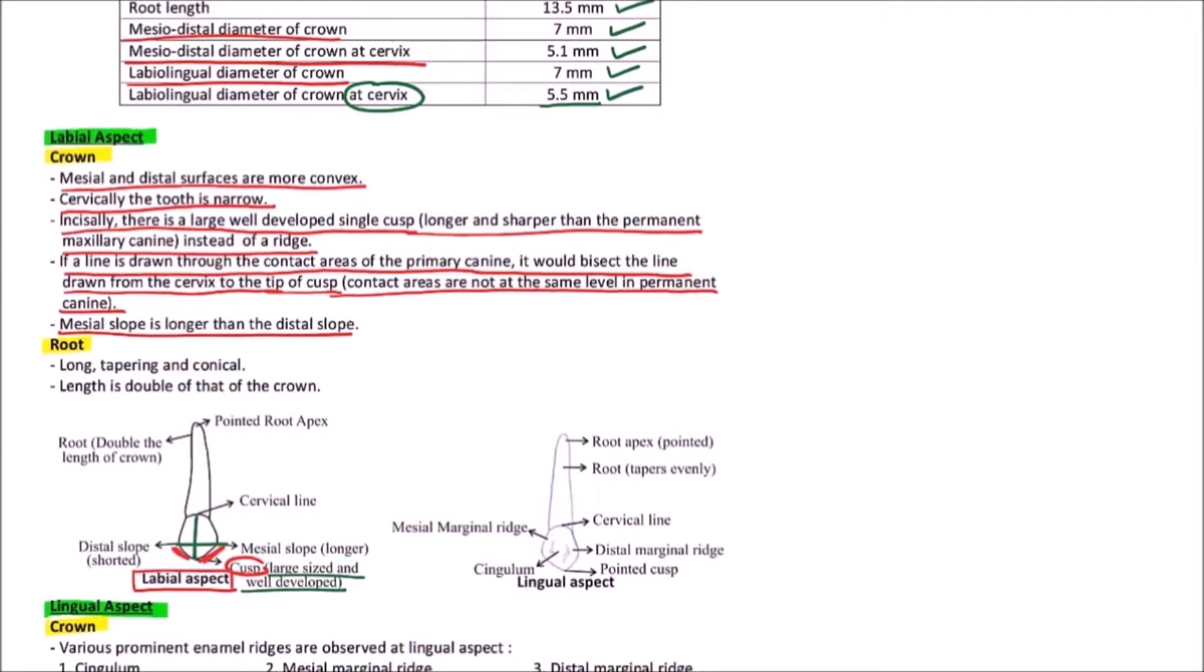Then the root. The root is long, tapering, and conical. We can observe that this is a long, tapering, and conical root, and length is double that of the crown. The root is double the length of crown and has a pointed root apex.